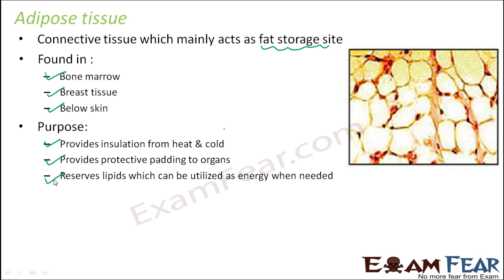Whenever you have too much fat, it provides insulation — that is why a person who is very fat will feel less cold than a person who is very lean and thin, because of the insulation provided by fats within the body. Fatty tissue also provides a cushion-like feel to all other organs as protective padding. Fats are nothing but lipids, so you can store them now and use them as a source of energy later when the body requires more energy.